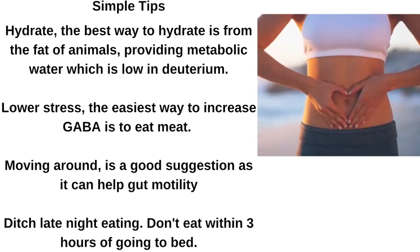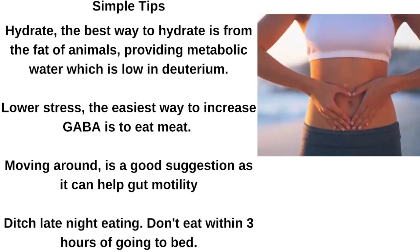On the internet there are some simple tips to help with gut health. Hydration - believe it or not, the fat of animals produces metabolic water, and a ribeye is about 70% water. You can lower stress - the easiest way to increase GABA, a stress-relieving substance, is to eat meat. Moving around is really good for gut motility, basically helping the gut move food along. And again, late night eating - don't eat within three hours of going to bed.